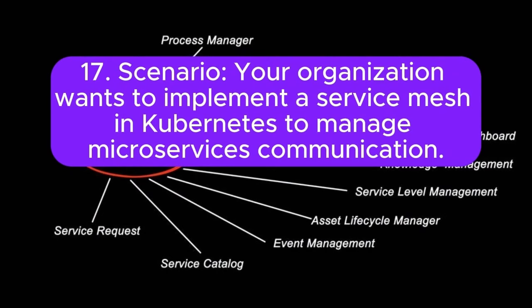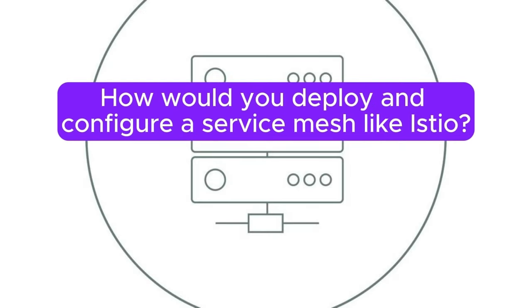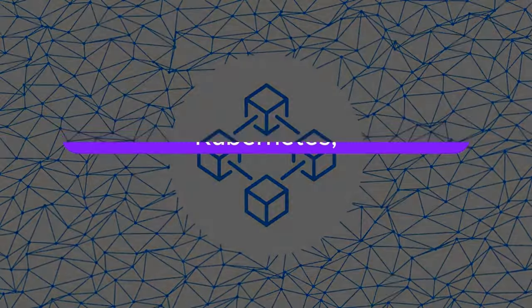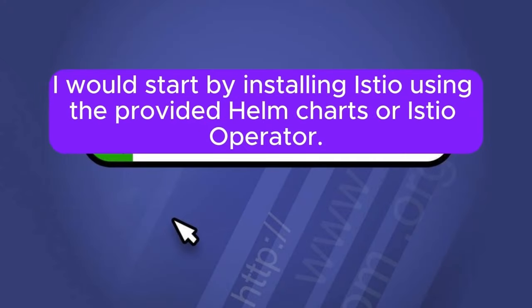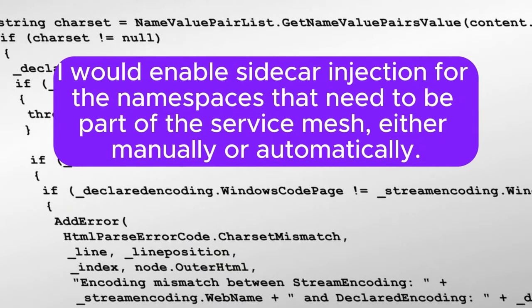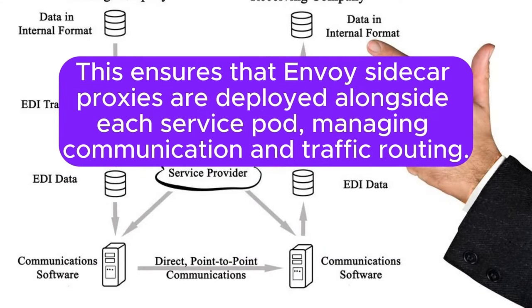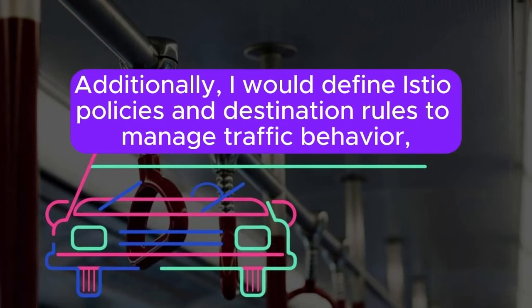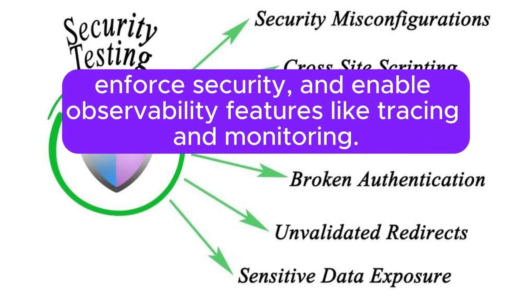Scenario 17: Your organization wants to implement a service mesh in Kubernetes to manage microservices communication. How would you deploy and configure a service mesh like Istio? Answer: To deploy and configure Istio as a service mesh, I would start by installing Istio using the provided Helm charts or Istio operator. I would enable sidecar injection for namespaces that need to be part of the service mesh. This ensures that Envoy sidecar proxies are deployed alongside each service pod, managing communication and traffic routing. I would configure Istio ingress and egress gateways to handle external traffic securely, and define Istio policies and destination rules.